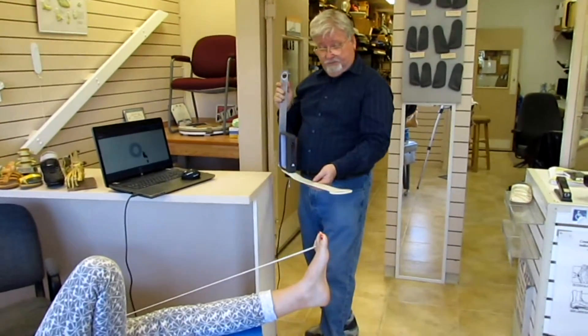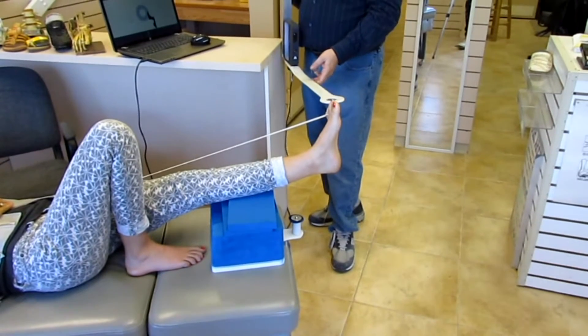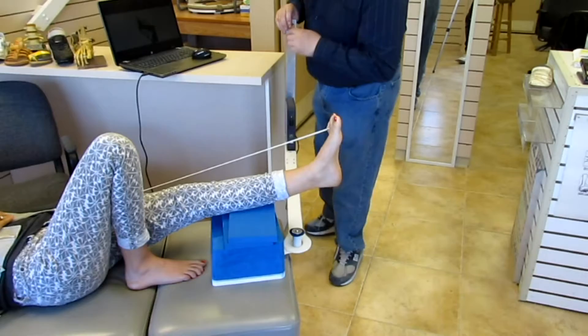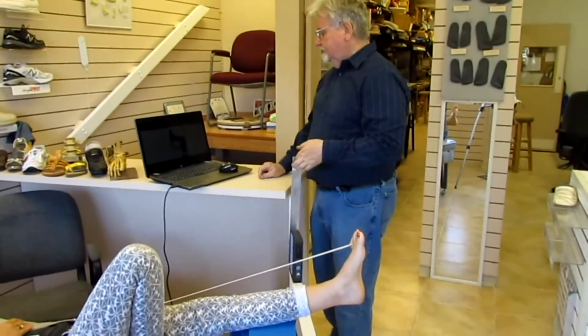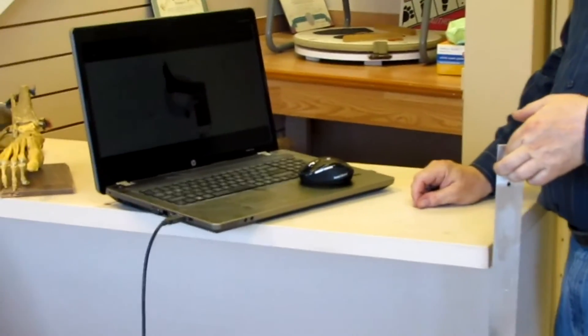Mr. Arch will now attach the pivot arm onto the pivot point on the bottom of the table. Snaps right in place very easily. And now we're going to go to a close-up of the computer program.